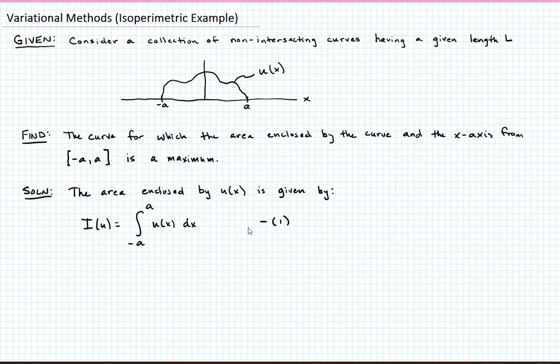We have that constraint, right? That whatever solution of u we choose, it has to have a length L. So let's go ahead and write that constraint equation. So in this case, we'll say the total length of the curve is given by, and we'll call this j of u, since it's another functional.